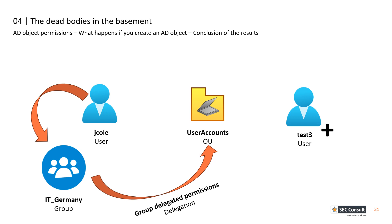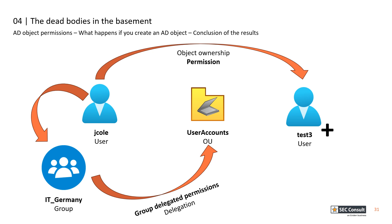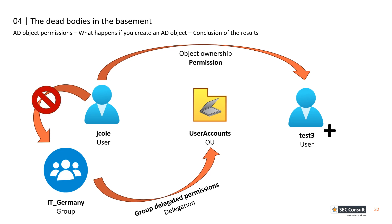John Cole can still control the objects he is an object owner of. If an attacker compromises his unprivileged account, the attacker can still compromise all the objects John Cole owns. These objects might not only reside in Tier 2 — they could also be in higher tiers. As a result, this can break the entire admin tiering model that was implemented.